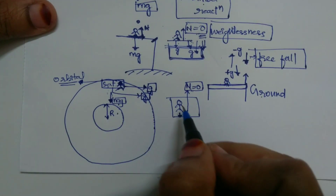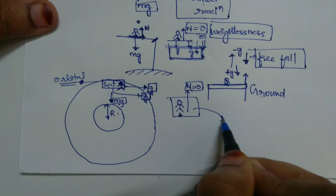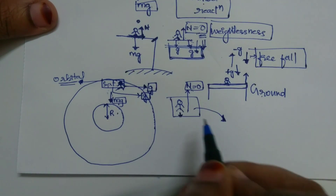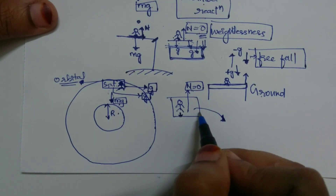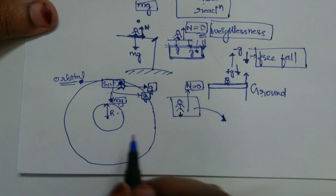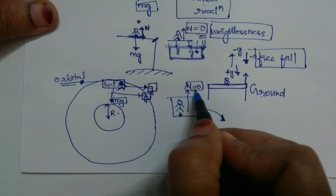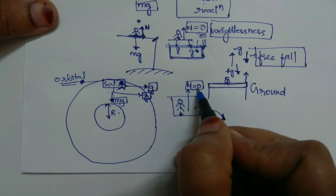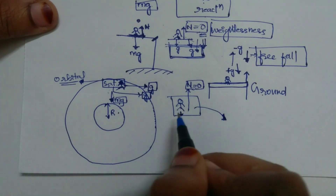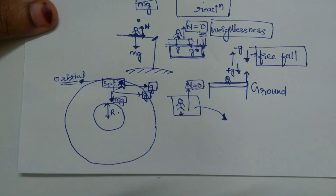Since you are moving along with the satellite at orbital velocity, there is no normal reaction. Since there is no normal reaction, you experience weightlessness.